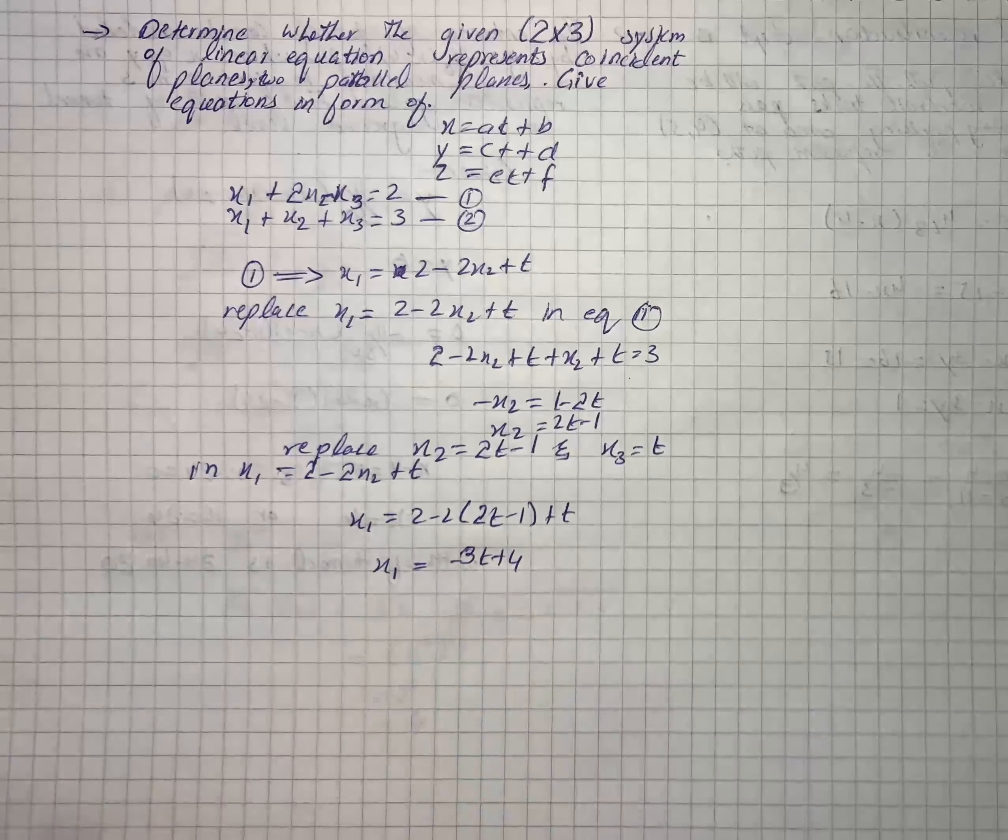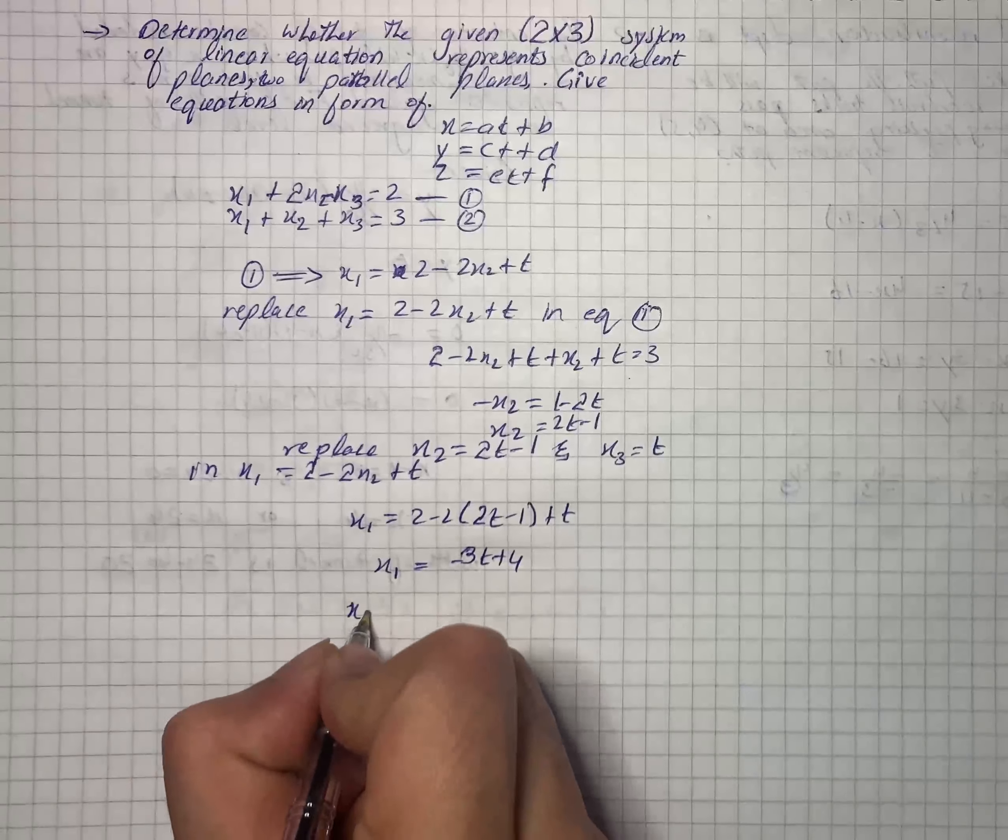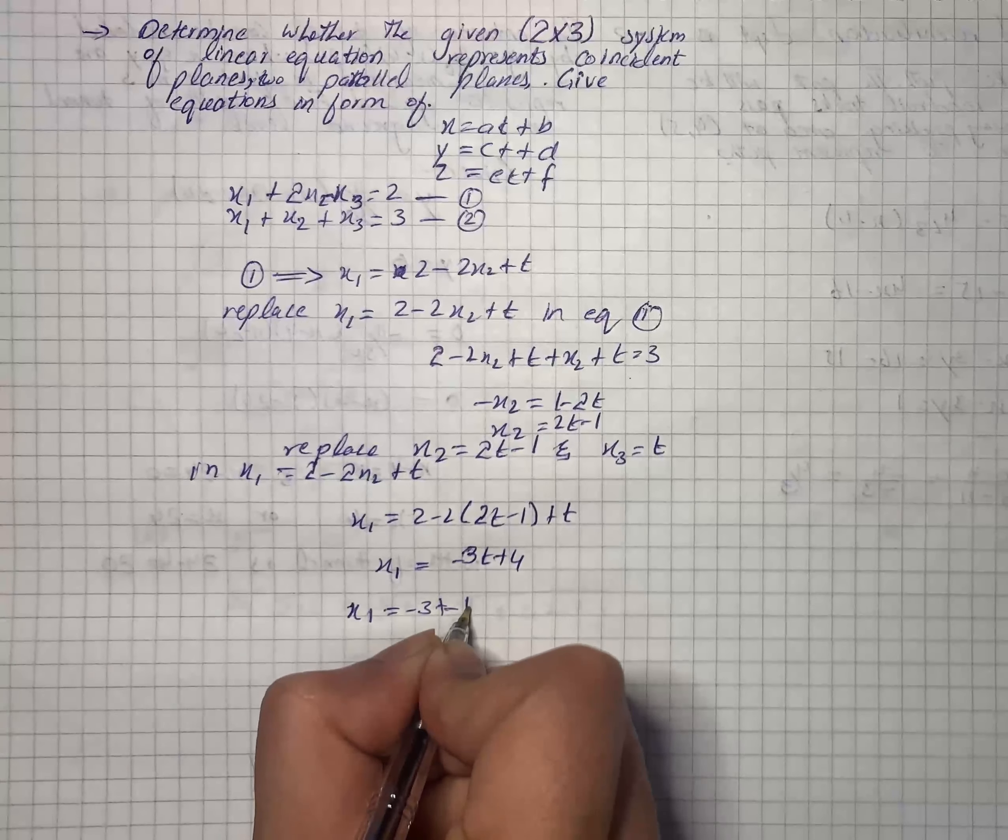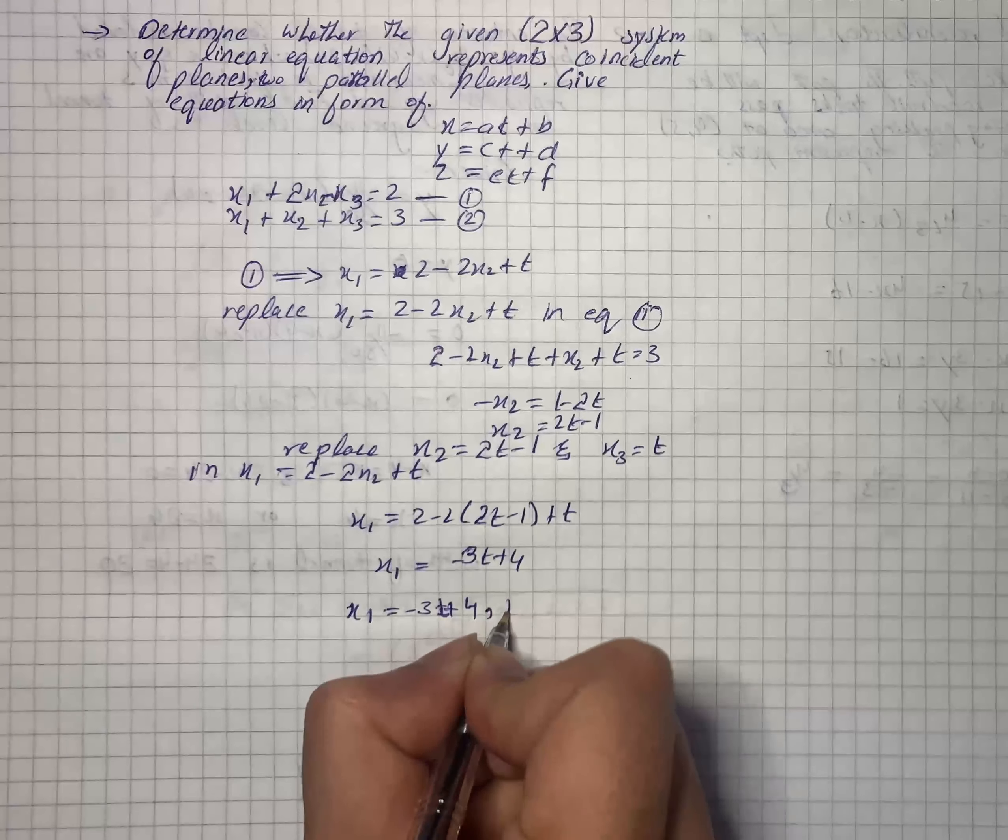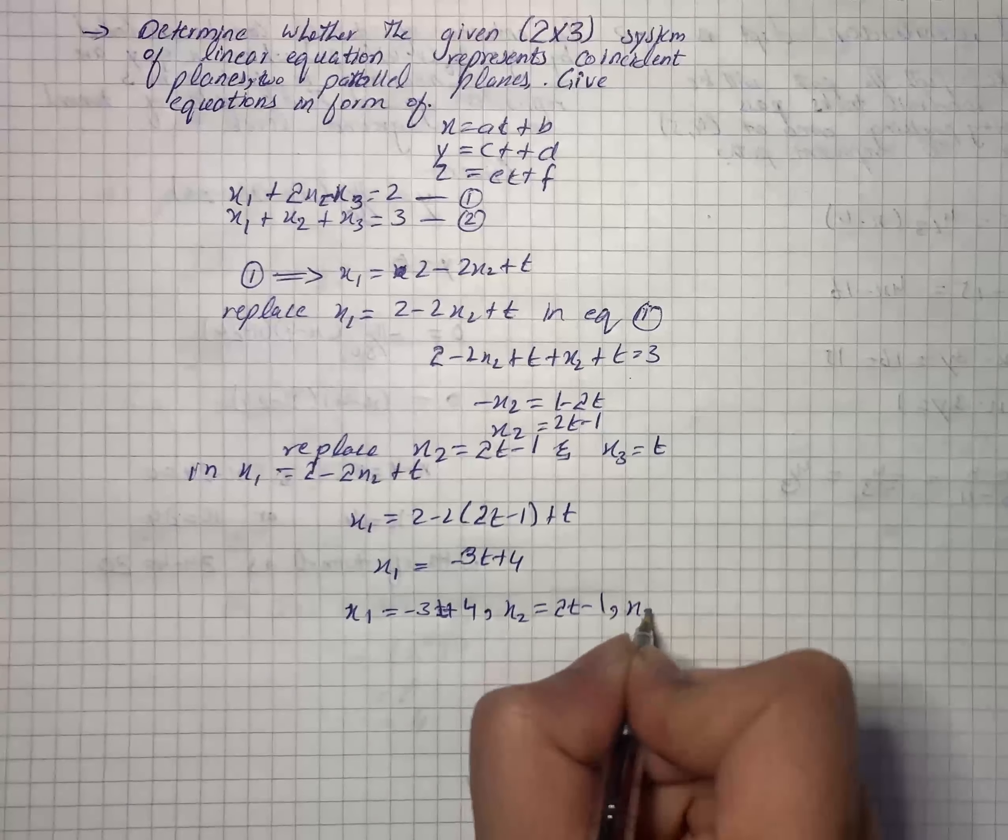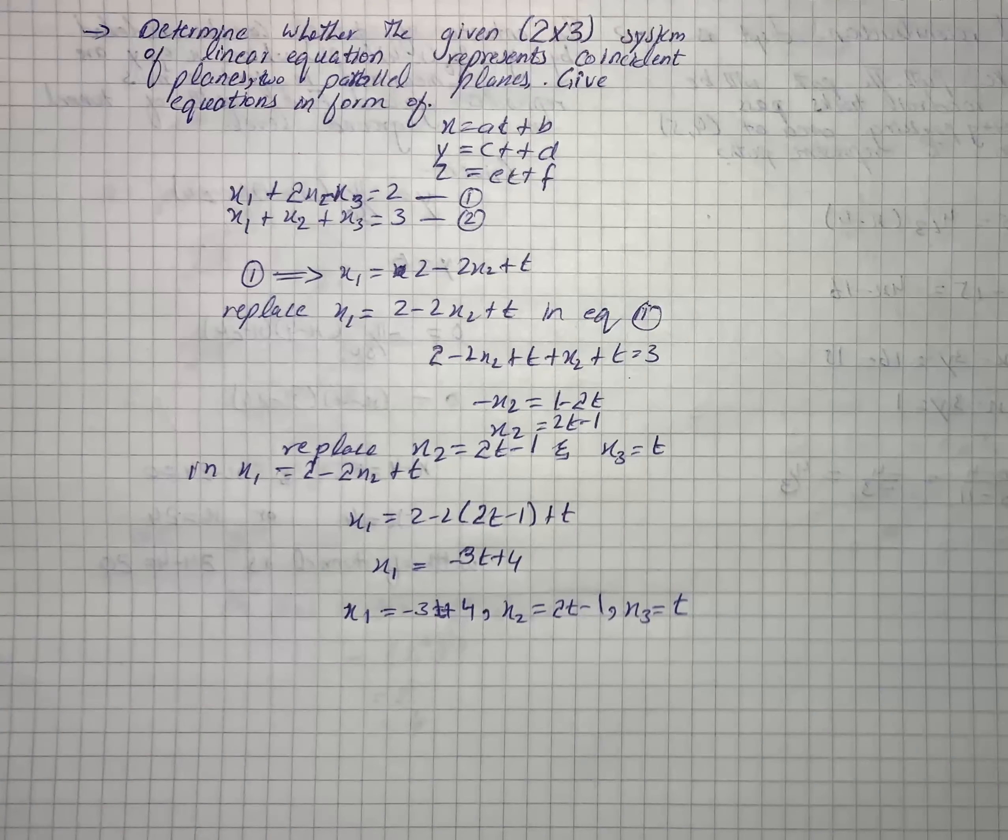That is the value of x₁ and the planes intersect in a line. The parametric equations are x₁ = -3t + 4, x₂ = 2t - 1, and x₃ = t. So here we have our solution for the given question.